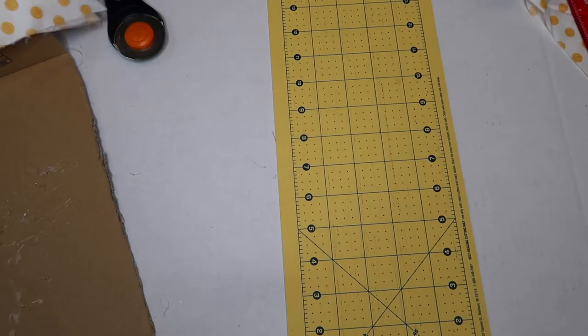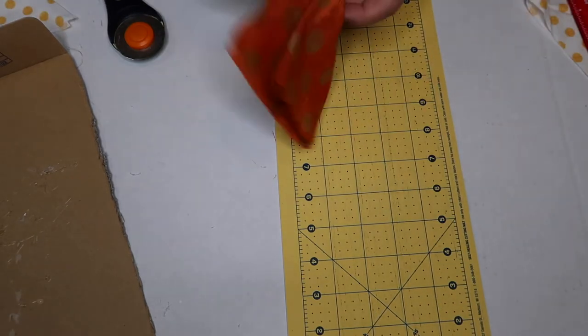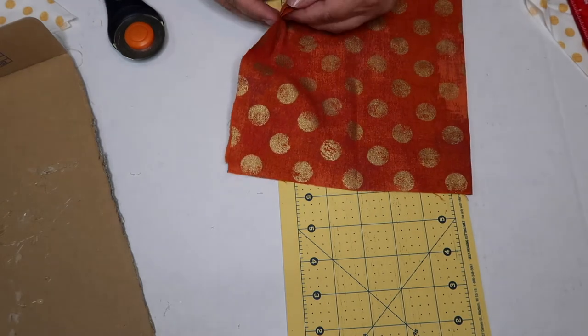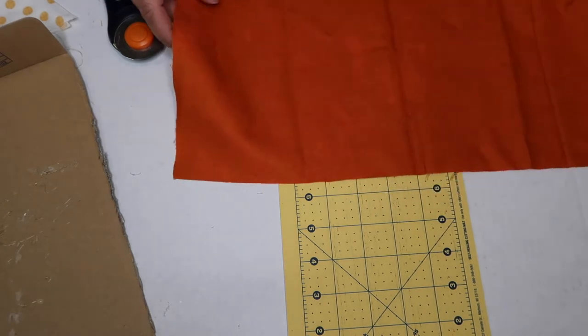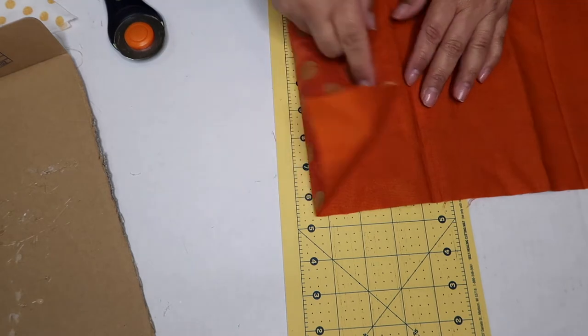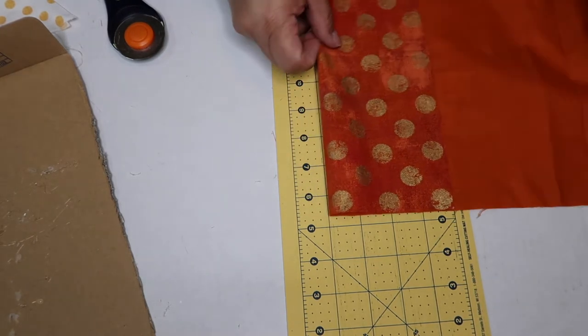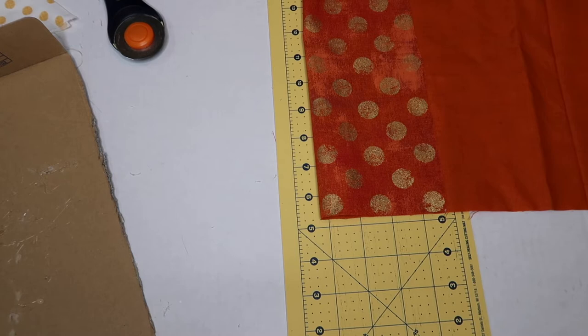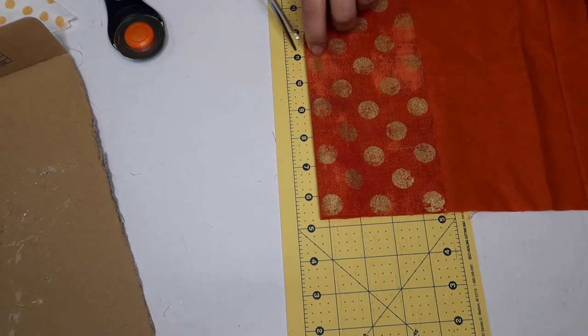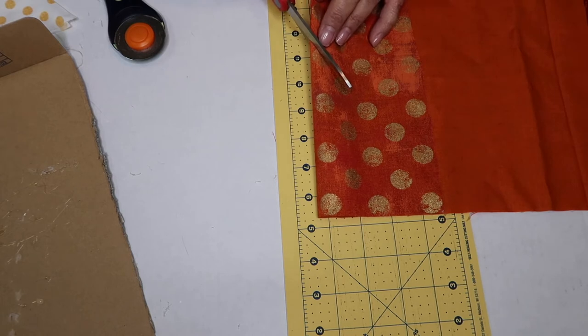There you go. Now I'm gonna go ahead and prep the other one. Again, taking a square - I have enough for two but I don't want to make two full size, so I'm gonna cut a smaller carrot and use my scissors, just cut up to the corner.